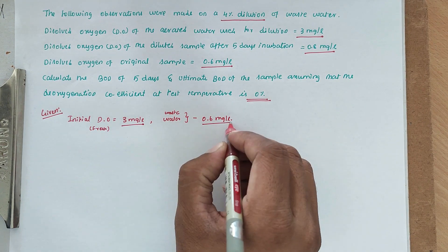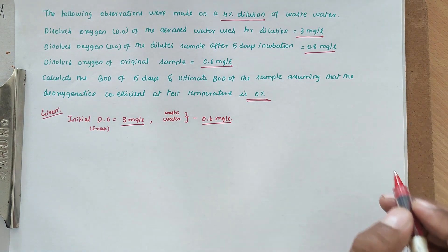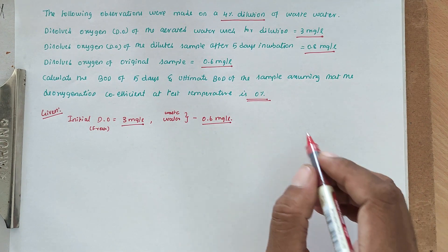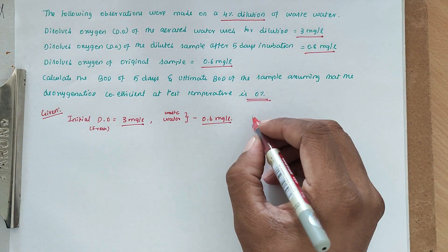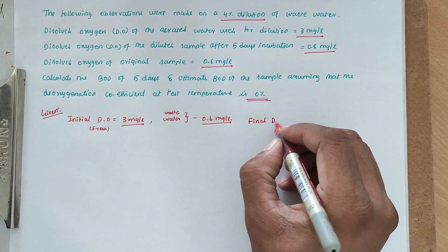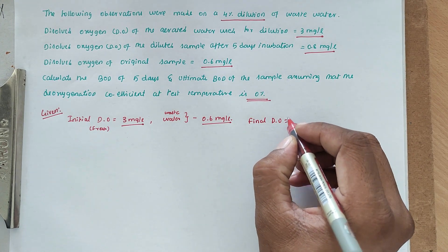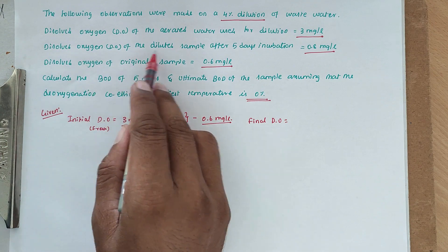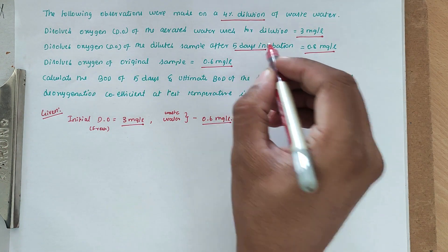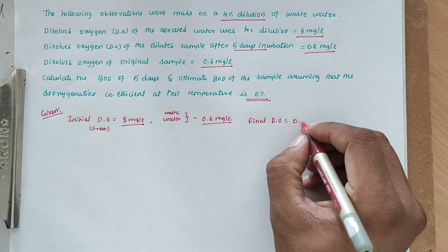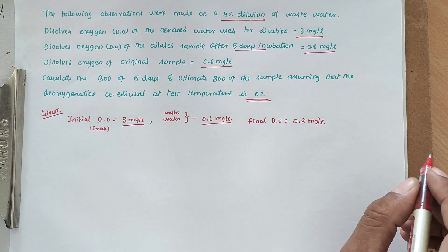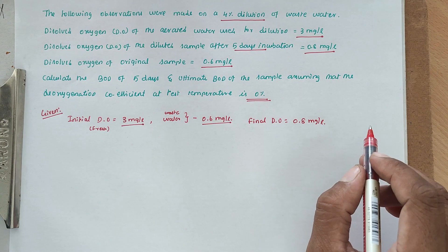So in fresh water the dissolved oxygen is 3 mg/L and in wastewater the dissolved oxygen is 0.6 mg/L. The final dissolved oxygen — that is, the dissolved oxygen of the diluted sample after 5 days of incubation — is 0.8 mg/L. These are all the given values, and we have to find out the BOD at 5 days.